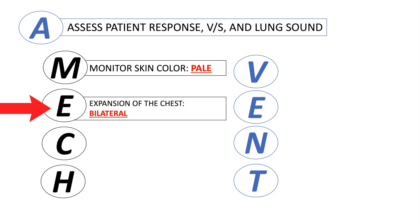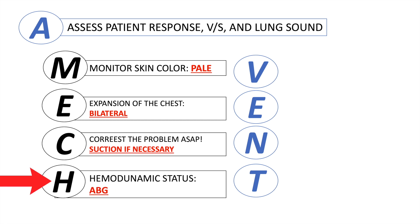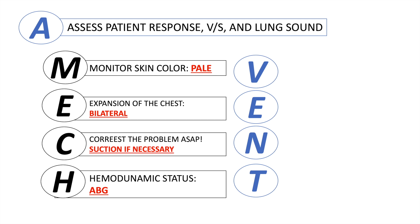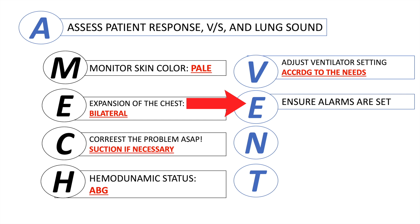E: Expansion of the chest — assess bilaterally for symmetrical chest expansion in patients on mechanical ventilators. C: Correct the problem as soon as possible. If there is increased mucus, suction as needed — but first check oxygenation level and hyperventilate the patient before suctioning. H: Hemodynamic status — always refer to ABG analysis to give proper treatment. V: Ventilator — adjust ventilator settings according to the patient's needs based on ABG analysis.